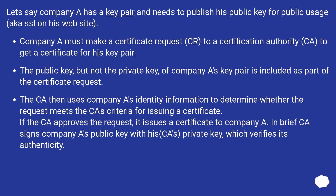Let's say company A has a key pair and needs to publish its public key for public usage, aka SSL, on its website. Company A must make a certificate request (CR) to a certification authority (CA) to get a certificate for its key pair. The public key, but not the private key, of company A's key pair is included as part of the certificate request.